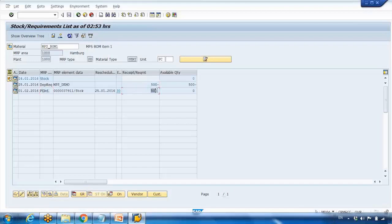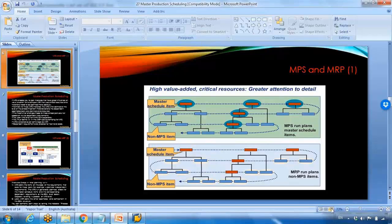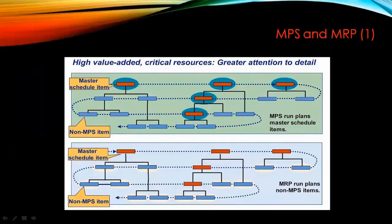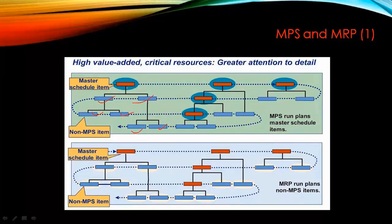So basically, when you run MPS on a product it will generate planned orders for the child level as well. However, the key difference is: if you make any changes to the planned order at the top MPS level, it will not automatically propagate those changes to the child-level planned orders. The child-level planned orders exist but are decoupled from changes at the MPS header level.